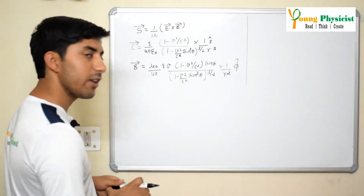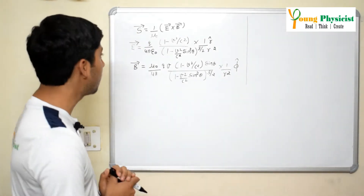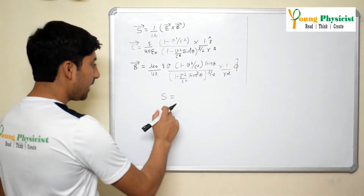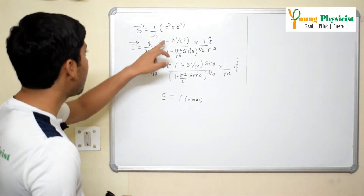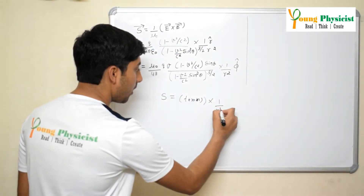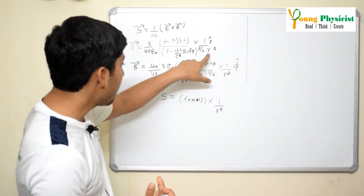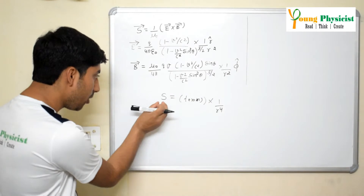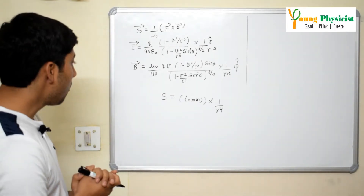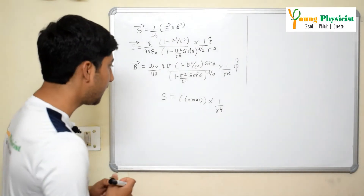Now if we want to calculate the magnitude of the Poynting vector for this charge particle moving with a constant velocity, we can do that. When we multiply the electric field and magnetic field, there will be some term multiplied by 1/r⁴. Because both E and B each have a factor of r², the magnitude of the Poynting vector will contain the term r⁴ in the denominator.